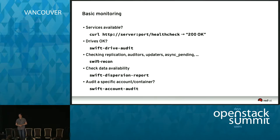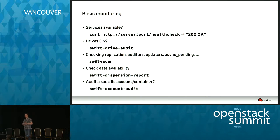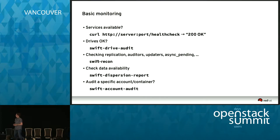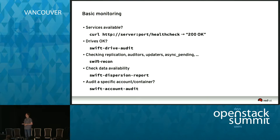Swift comes with a few tools that make this simpler. For example, there's a health check middleware you can enable inside your servers in the pipeline. If you query the server with a specific health check URL, you'll get a 200 OK response if the server is available. Another useful tool is Swift Drive Audit, which parses your log files for disk errors. If there's an error on a disk, it will unmount the disk and write a log entry. When a disk is unmounted, servers and replicators can avoid trying to store or retrieve data on those disks.